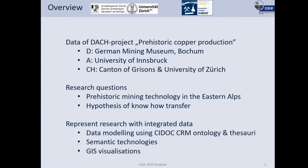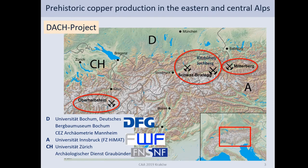With the data we have the technology and the hypothesis. We represent that in an integrated data approach using data modeling with CIDOC CRM, thesauri, and semantic technologies, with some GIS visualizations as a first glimpse. The project has three research areas: Mitterberg researched by the German team, Schwarzbrichsleck in the lower Inn valley and Kitzbühel by the University of Innsbruck, and the Oberhalbstein researched by the University of Zürich — all located in Austria and Switzerland.